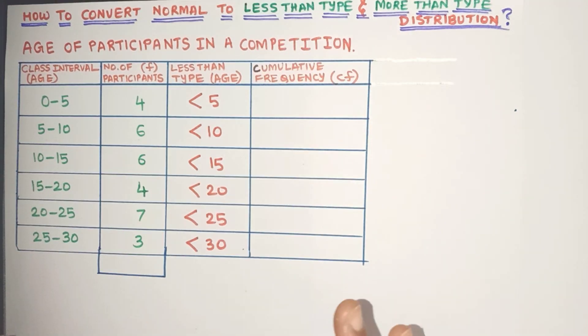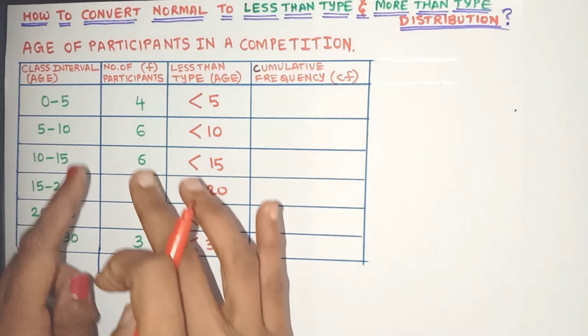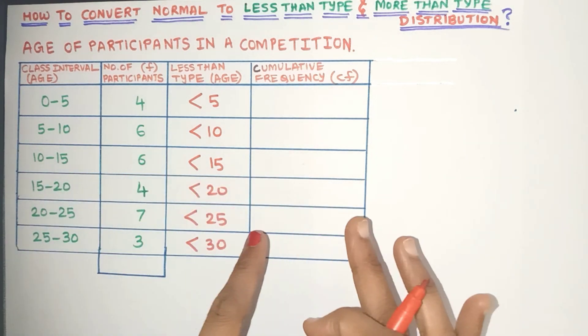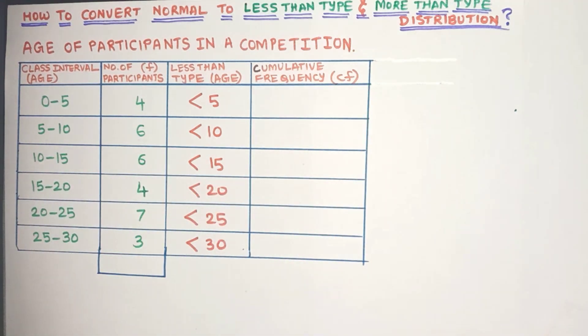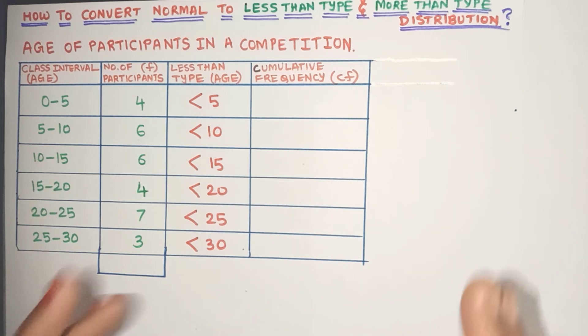Now in the less than type and more than type, we don't have a frequency column. Instead, we have the cumulative frequency. Now what is cumulative frequency? It's called the added frequency. So let's see how to find it out.